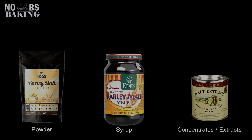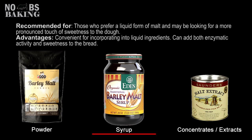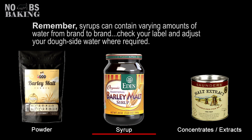Both diastatic and non-diastatic malt are commercially available in three main forms: usually powder, syrups, and concentrates. Powders are usually the most common form that home bakers prefer to use — easy, versatile, and commonly available everywhere. There are also folks who like using syrups, which often impart a bit sweeter and more flavorful contribution. Just be cautious when adding syrups, as they do contain water, whereby you may need to make a hydration adjustment to your recipe.